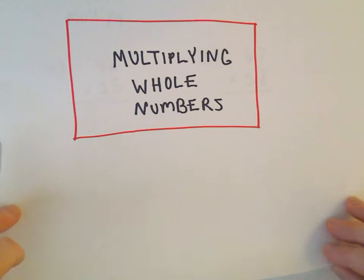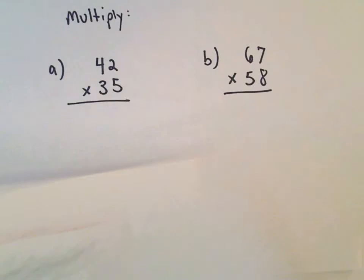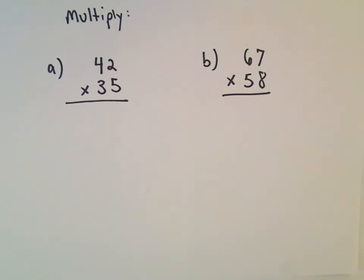Alright, so two more examples here of multiplying whole numbers. And this time we have two two-digit numbers. So the first thing I'm going to do is...